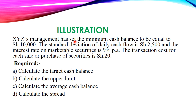Going through the question to identify the components of the Miller-Orr formula: the minimum cash balance of 10,000 shillings is our L, the lower limit. The standard deviation of daily cash flow is 2,500 shillings. Note that the formula requires variance, not standard deviation — since standard deviation is the square root of variance, we square the standard deviation to get the variance.